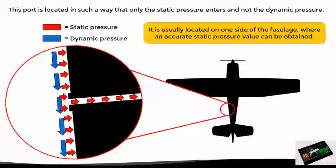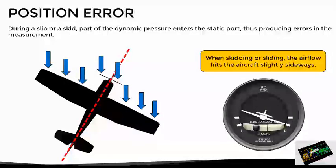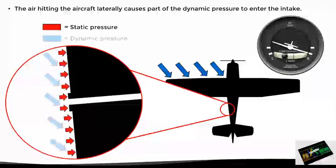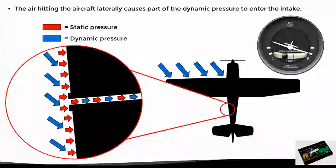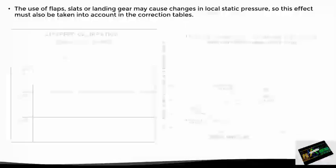However, this design also has some position errors. If the aircraft performs a skid or a slide, part of the dynamic pressure will enter the static port, thus producing errors in the measurement. This occurs because in a skid or slide, the airflow not only hits the plane from the front but slightly on one side. The dynamic pressure will now be exerted slightly against the fuselage where the static port is located, resulting in part of that dynamic pressure entering the static port. Apart from this effect, the use of flaps, slats, landing gear, or other parts of the plane can also cause changes in the local static pressure, so this effect must also be taken into account in the correction tables.